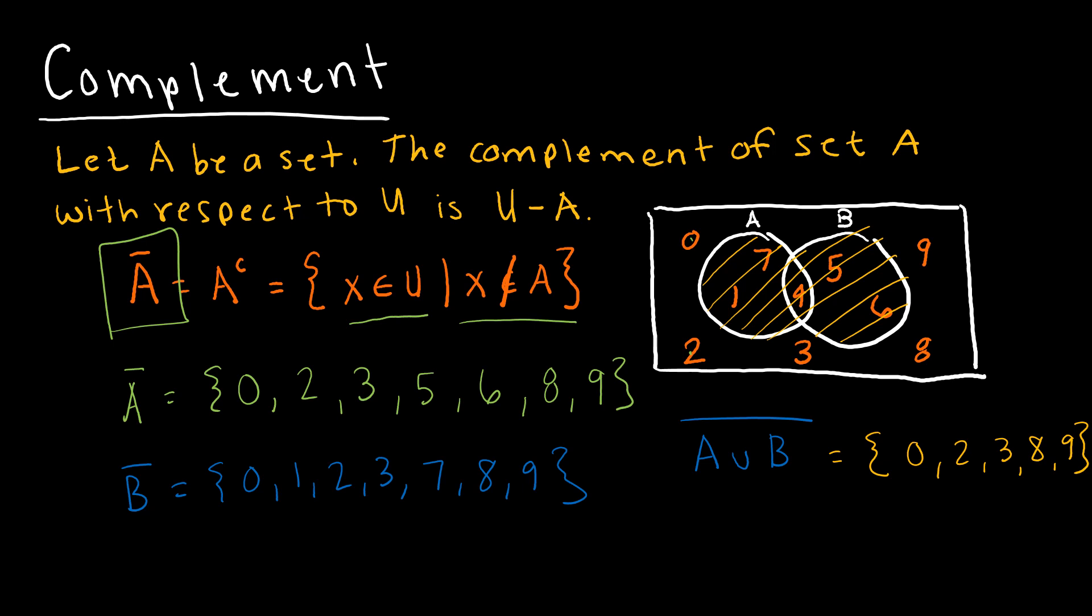I could do A intersect B and not. And again, A intersect B is just this part in the middle. So not A intersect B would be everything else, which would be 0, 1, 2, 3, not 4 because that's the one in the middle, 5, 6, 7, 8, 9. So hopefully we understand the concept of a complement.